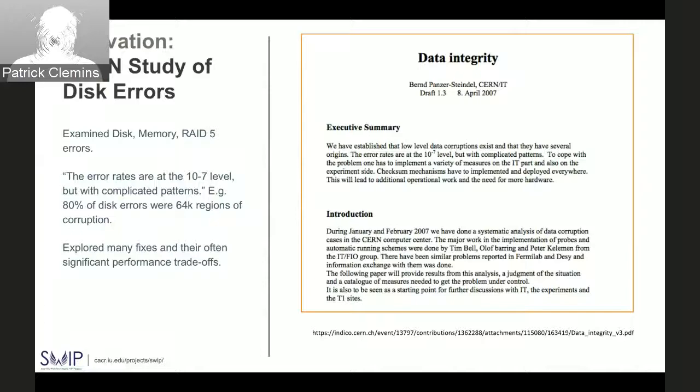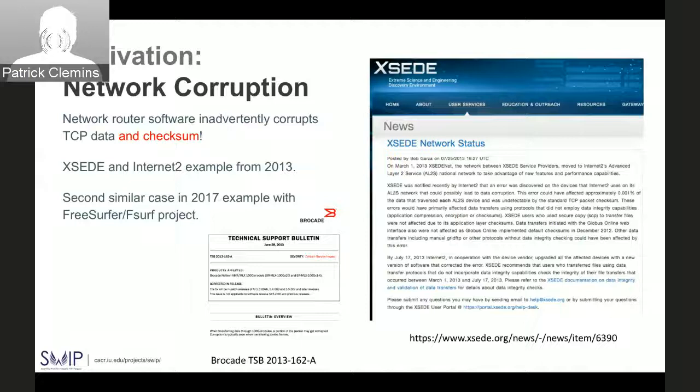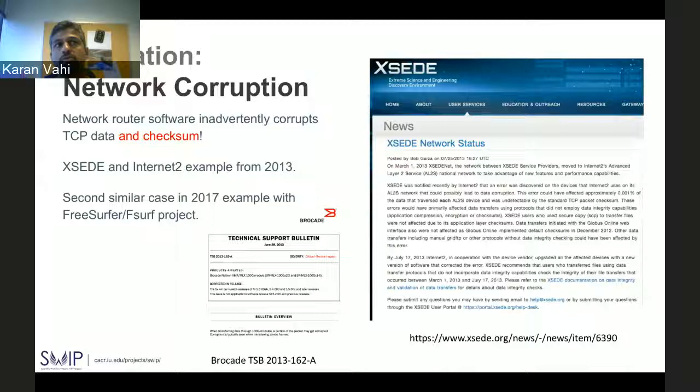Another sort of corruption our users encountered is network corruption, where a site upgraded their networking infrastructure and the new network router software inadvertently corrupted TCP data and checksums. This is an example cited from 2013, and users running Pegasus workflows also encountered a similar issue earlier in 2017.